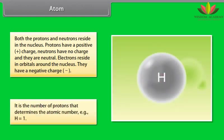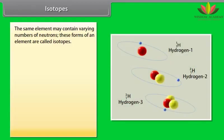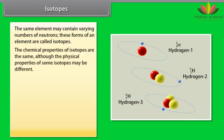It is the number of protons that determines the atomic number. That is, H is equal to 1. Isotopes. The same element may contain varying numbers of neutrons. These forms of an element are called isotopes. The chemical properties of isotopes are the same, although the physical properties of some isotopes may be different.